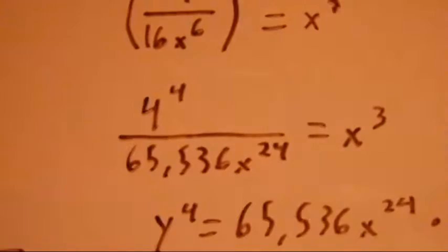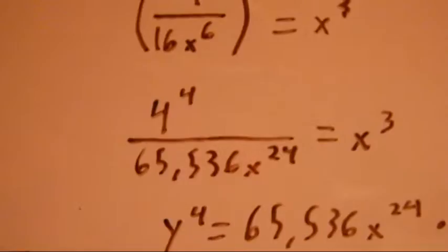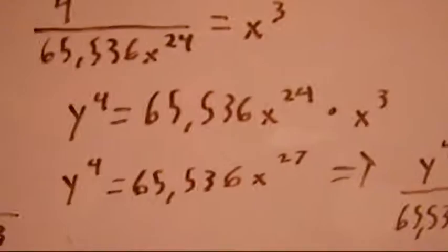Which comes to 4 to the 4th over 65,536x to the 24th, x to the 4th, which equals x to the 3rd.